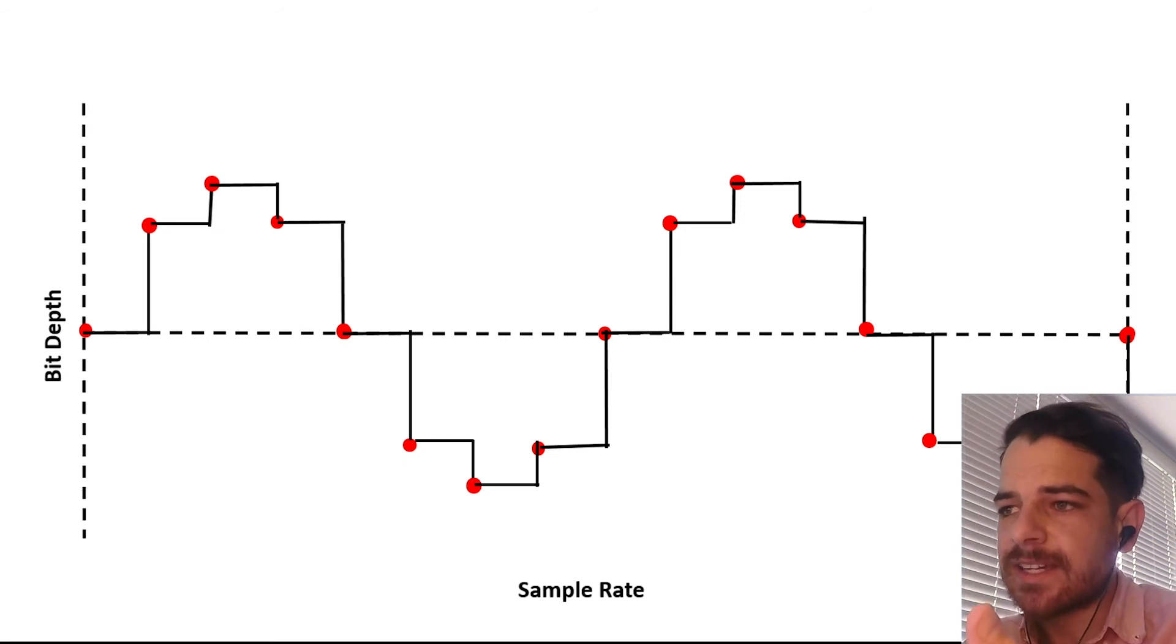It still doesn't look fantastic. There'd still be a lot of issues with this, except you're seeing the trend here is that as I increase bit depth and I increase sample rate, I'm getting closer and closer to that original analog curve. So the higher the bit depth, the higher the sample rate, the higher the quality and the closer I'm getting to this original analog wave.